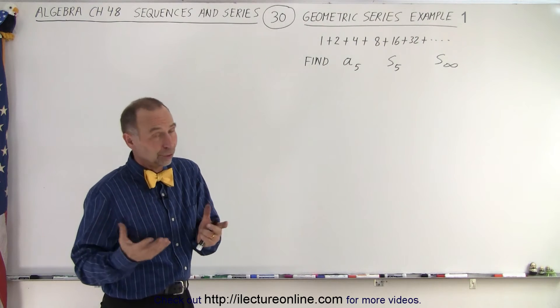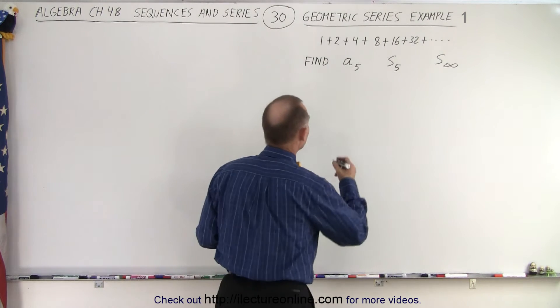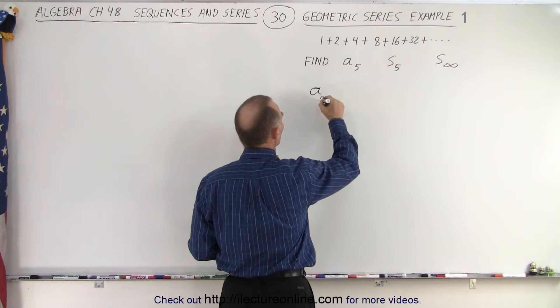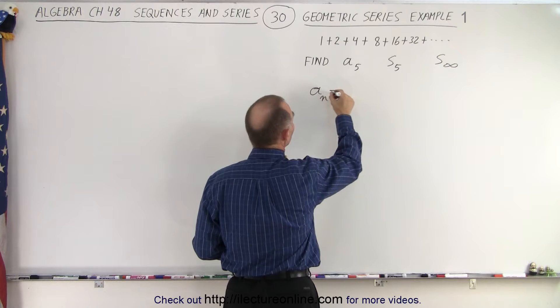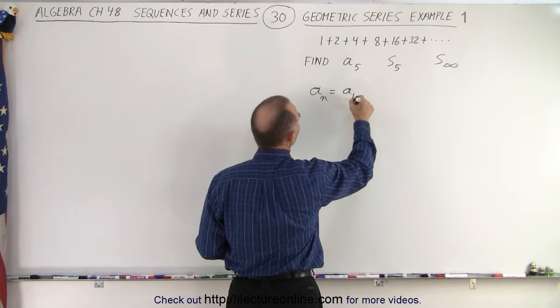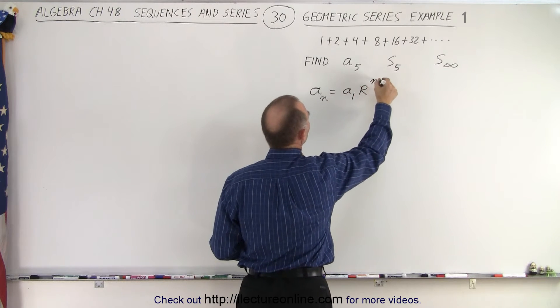That means we're supposed to remember those equations. In general, the nth term of a geometric series is equal to A sub 1 times R to the N minus 1.